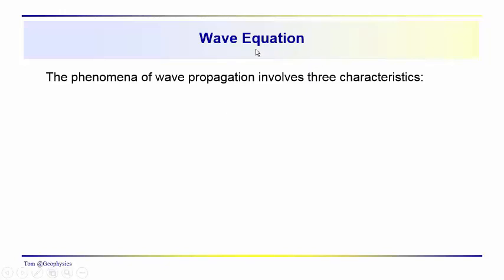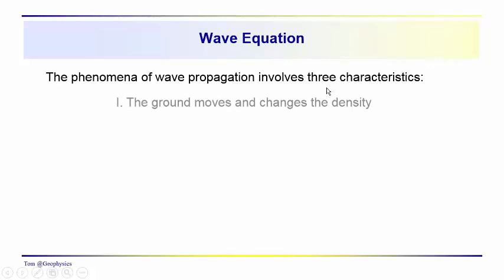We're now going to develop the wave equation. The wave equation is a good starting point for showing how various physical properties are associated with wave propagation. We're going to think of the subsurface as an elastic material composed of idealized little particles bound together by springs. The phenomenon of wave propagation can be broken down into three basic characteristics.